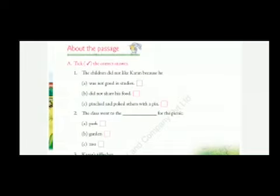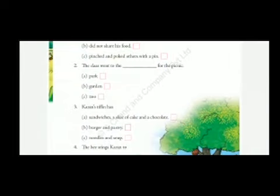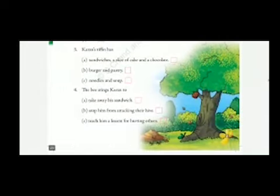Now let us solve the passage question bank. Tick the correct answer. The children did not like Karan because — option C: he pinched and poked others with a pin. The class went to the blank for the picnic — option A: the park. Karan's tiffin has — option A: sandwiches, a slice of cake, and a chocolate. The bee stings Karan to — option C: teach him a lesson for hurting others.